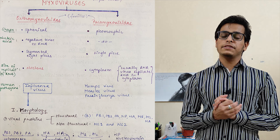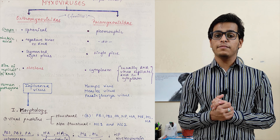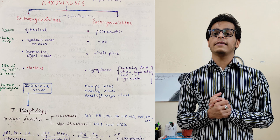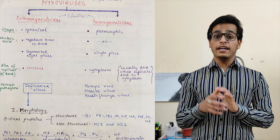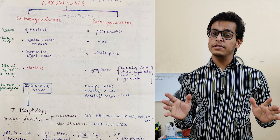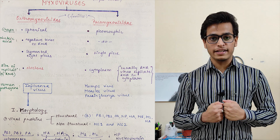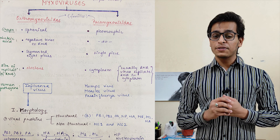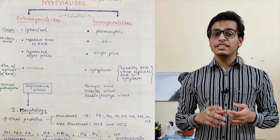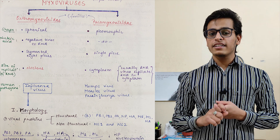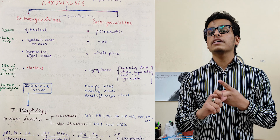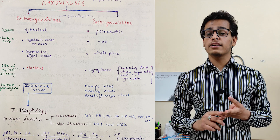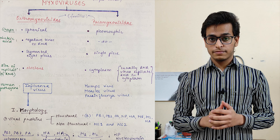Hello, my name is Prince Kaushik and I am a 6th semester MEB student from Ames, Jodhpur. Today we are going to discuss about myxoviruses. The four points we are going to talk about are: the shape of the virus, the site of replication of the genetic material, the genetic material itself, and fourth, the examples.